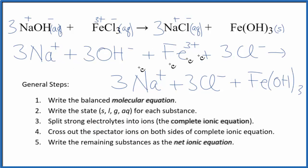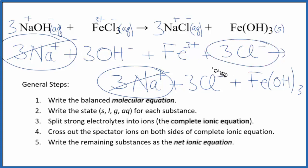So in the reactants, I can see 3 sodium ions in the products. There are also 3 sodium ions, so we'll cross those out. In the reactants, I have those 3 chloride ions, and then in the products.